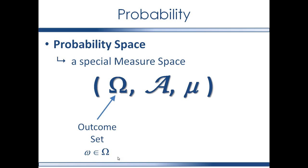One way we can use probability theory in applied research is to model the data generating process, which is simply the actions taken by the researcher to obtain the data that was collected. The outcome set includes all the possible outcomes you could get from a data generating process — all the possible outcomes represent the population of interest. So if you want to get information about the blood pressure of all the vegans in the world, you may only be able to get a hold of some of them, but all of them are your possible outcomes — they are all part of your population of interest.